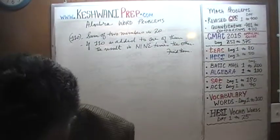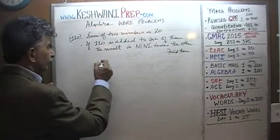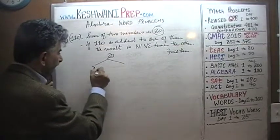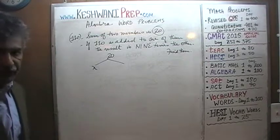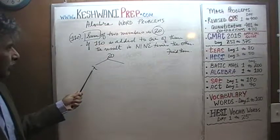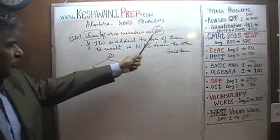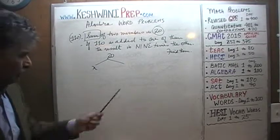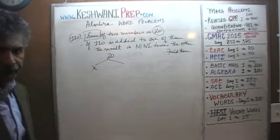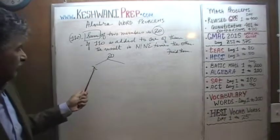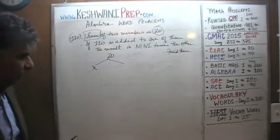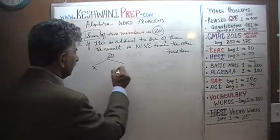The sum of two numbers is 20. Let one of them be X. If the sum is 20 and one number is X, the other must be 20 minus X. For example, if one number is 3, the other is 17 (i.e., 20 minus 3); if one is 5, the other is 15. So in general, the other number is 20 minus X.